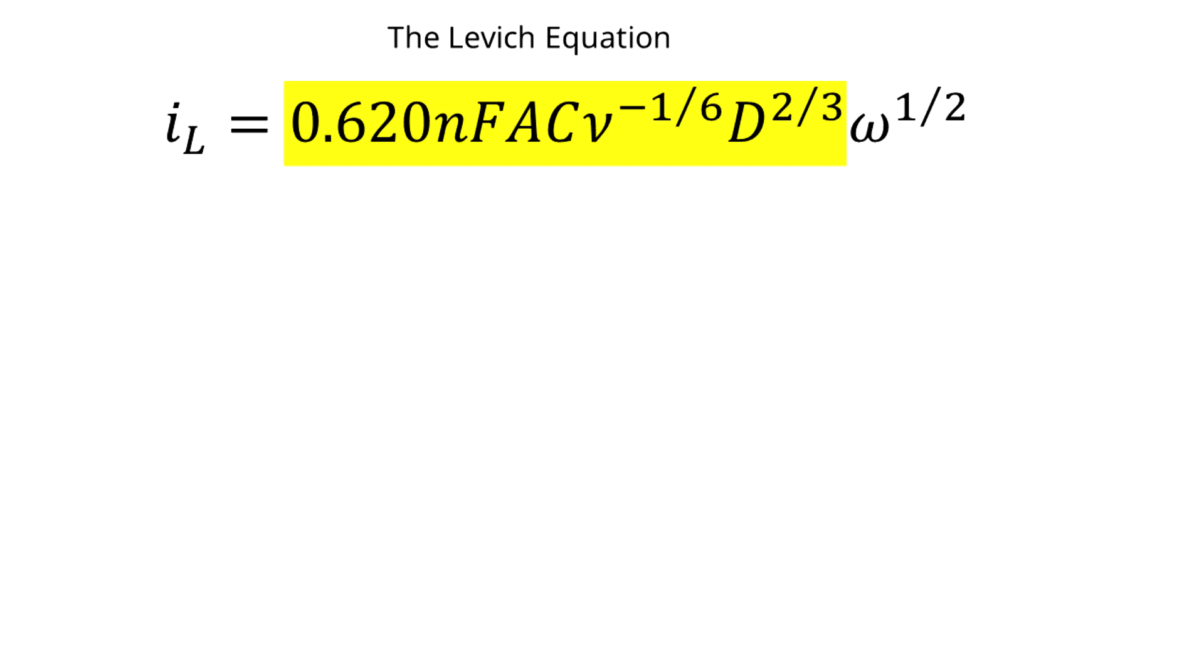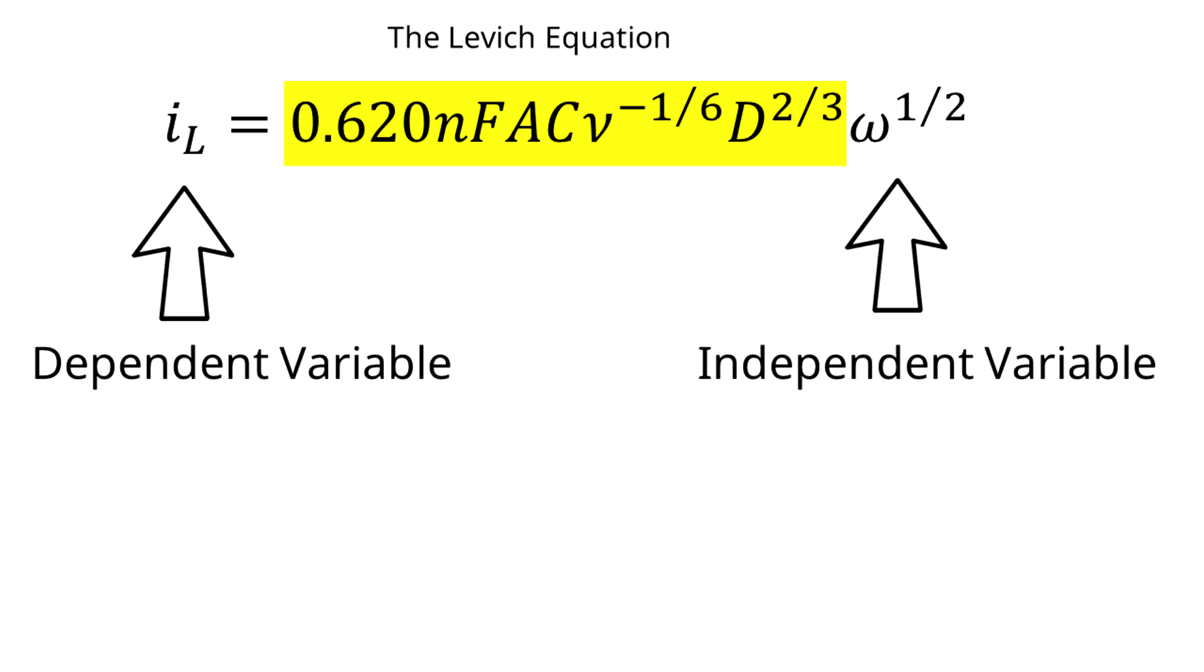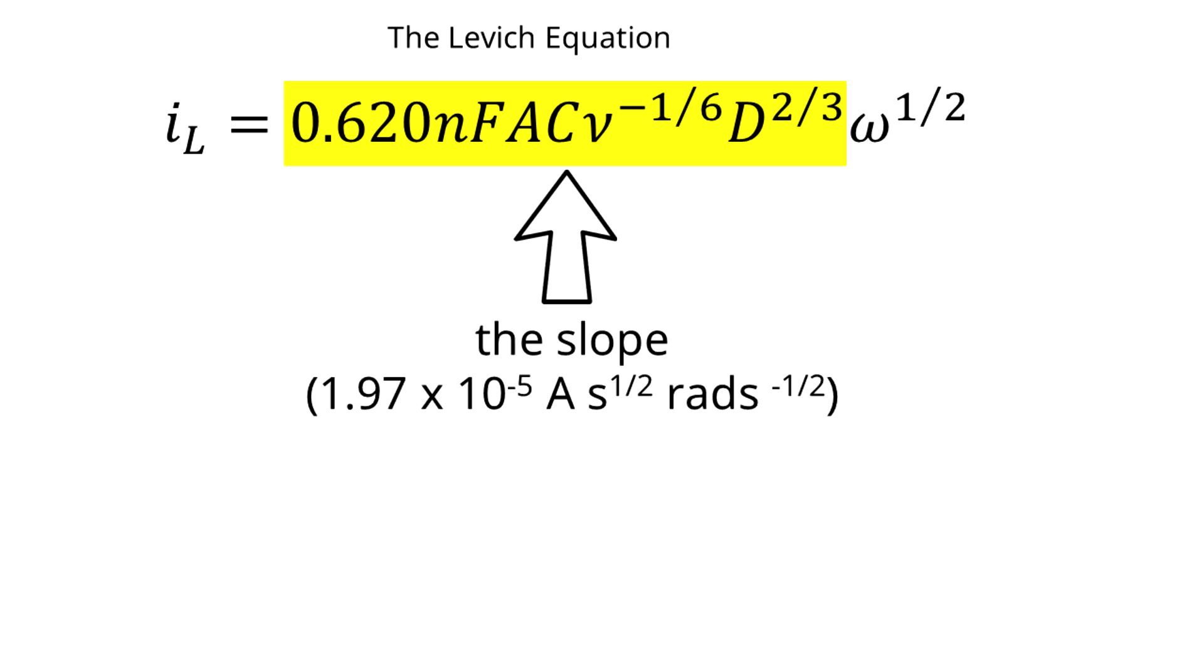So if we look at the Levich equation, the limiting current is my dependent variable, and the rotation rate is my independent variable, which leaves the slope equal to the rest of the parameters. Next, I will set the slope that I've calculated using Aftermath equal to all these parameters, leaving the diffusion coefficient term out. And we will be solving for the diffusion coefficient.